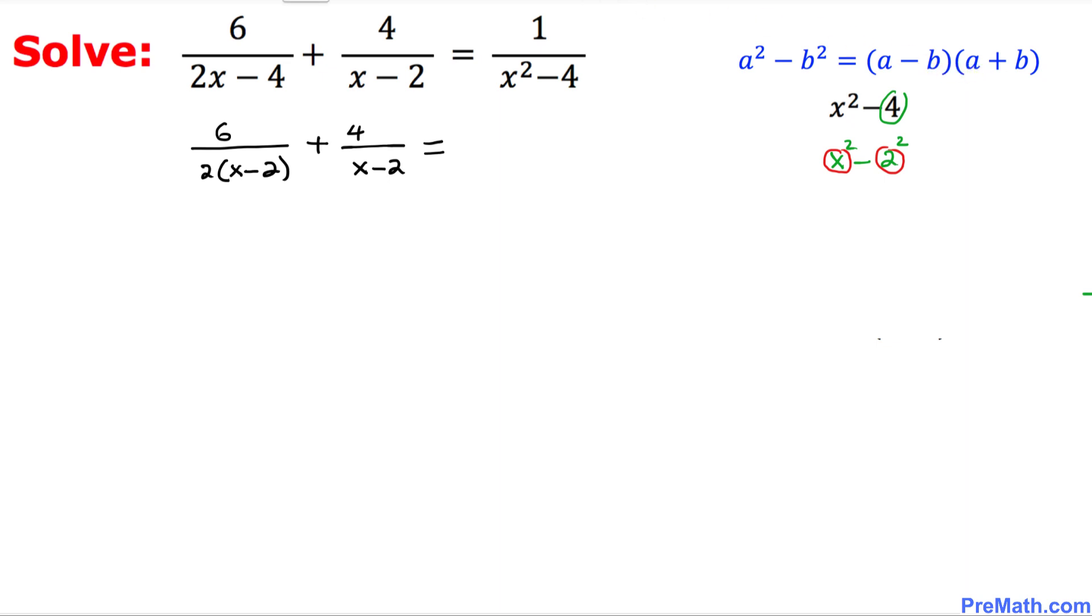Therefore, this could easily be written as x minus 2 times x plus 2. So that's why I'm going to write down 1 over this fraction could be written as x minus 2 times x plus 2. So far, so good.